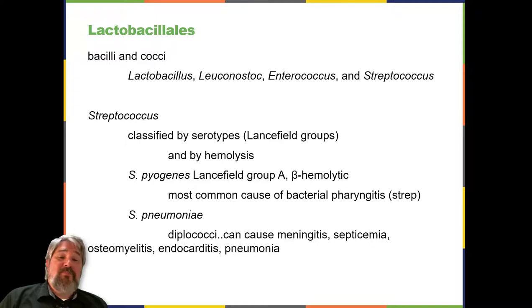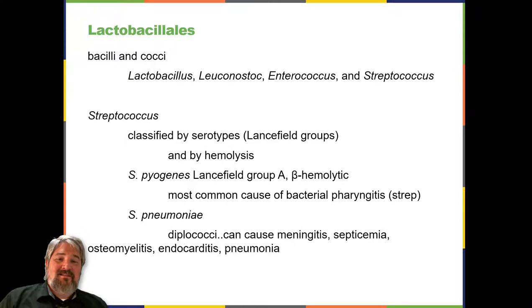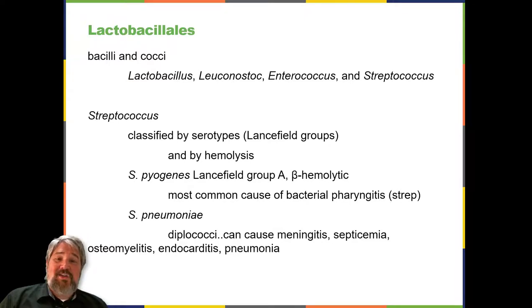The order Lactobacillales comprises low-GC Gram-positive bacteria that include both bacilli and cocci in the genera Lactobacillus, Leuconostoc, Enterococcus, and Streptococcus. Bacteria of the latter three genera typically are spherical or ovoid and often form chains. Streptococcus, the name of which comes from the Greek word for twisted chain, is responsible for many types of infectious diseases in humans.